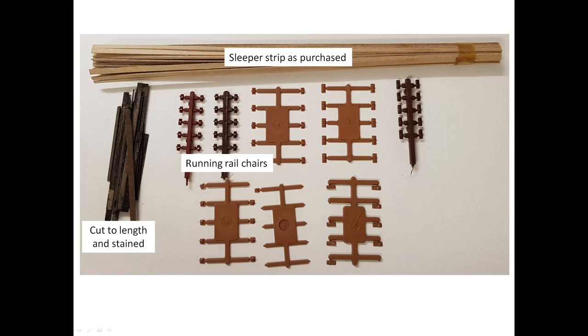Functional chairs have been available from the trade for some time. Originally from K&L and subsequently from C&L Fine Scale, they're now produced by Exacto Scale and are available from the Scale4 Society and EM gauge society stores. This photograph shows those that I've used. They shouldn't be stored for too long because they become brittle with age.